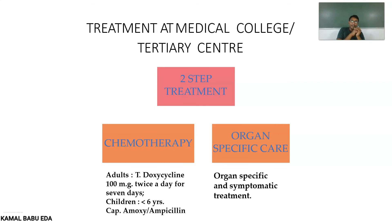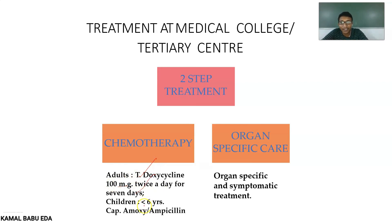Treatment at a medical college or tertiary center involves two steps: chemotherapy followed by organ-specific care. In chemotherapy, tablet doxycycline 100 mg twice daily for seven days is given; for children, capsule amoxicillin or ampicillin twice daily for seven days. Organ-specific and symptomatic treatment is provided based on organ involvement.